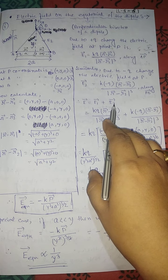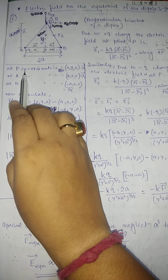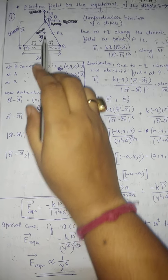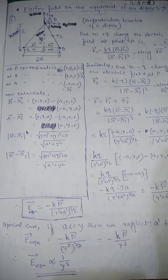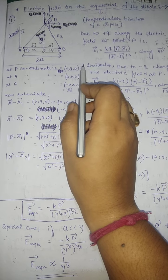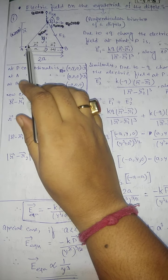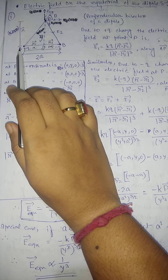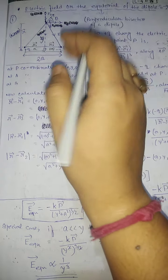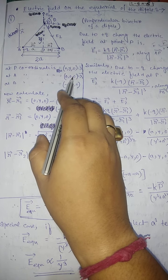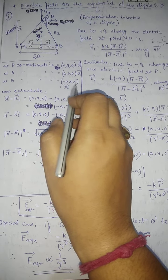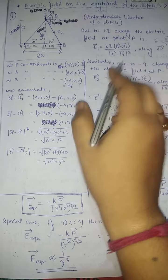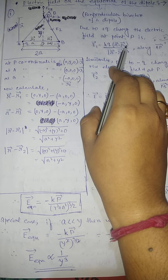The net electric field at point P is E = E1 + E2. The coordinate of P is (0, y, 0), represented by position vector r. The coordinate of A is (a, 0, 0) with position vector r1, and B is (−a, 0, 0) with position vector r2. We now calculate r − r1, r − r2, and their magnitudes.